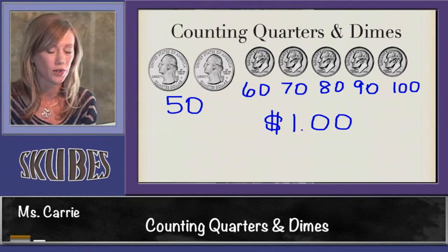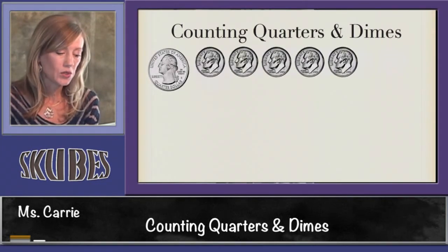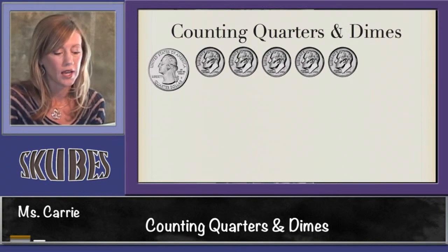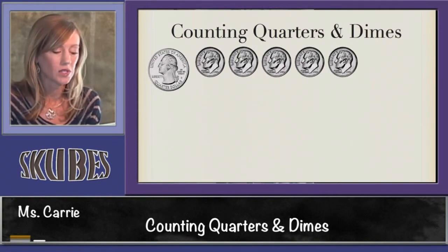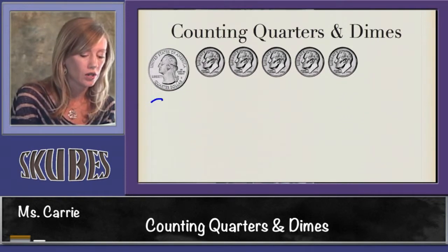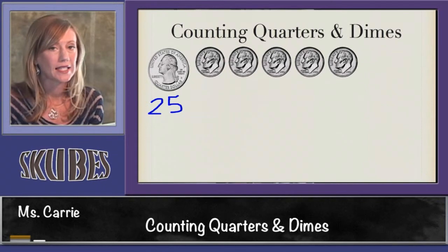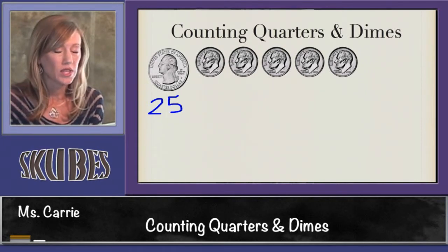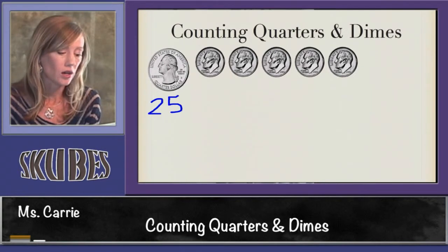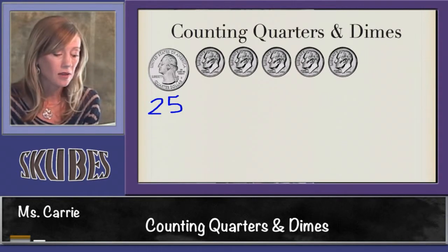Let's look at another group. In this group we have one quarter and one, two, three, four, or five dimes. This is a little trickier because we know that one quarter is 25 cents. When you add 10 to a number where the digit in the ones place is not a zero, it's a little bit harder. But all you need to remember is that the digit in the ones place stays the same.